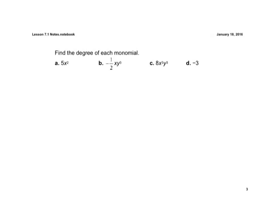So for A, we have 5x squared. Well, the only exponent we see there on a variable is the 2. So the degree of that first monomial is just 2.